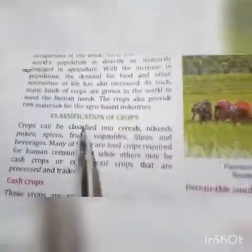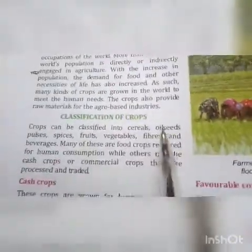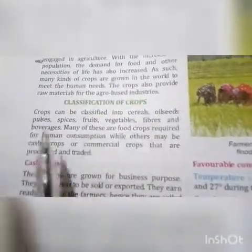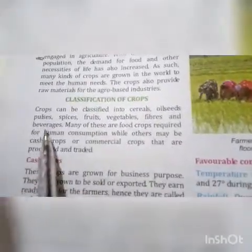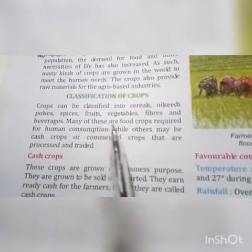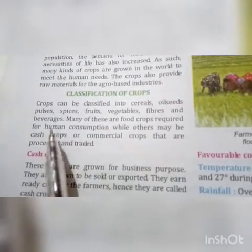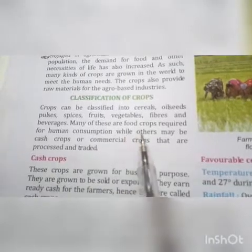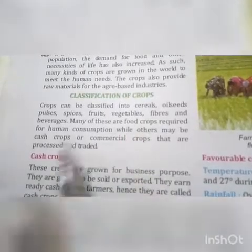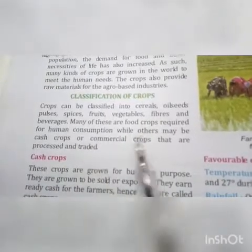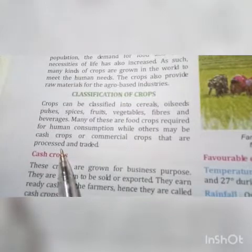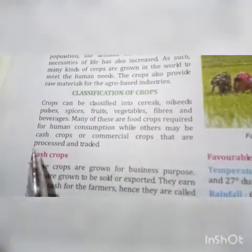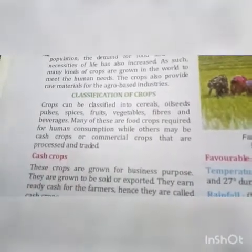Classification of crops: crops can be classified into cereals, oilseeds, pulses, spices, fruits, vegetables, fiber and beverage. Many of these are food crops required for human consumption, while others may be cash crops and commercial crops that are processed and traded.